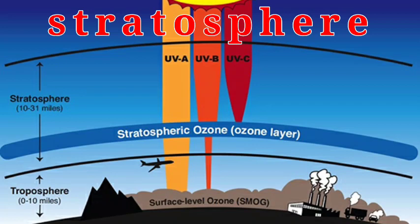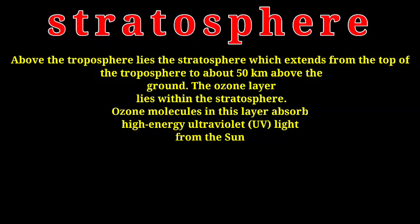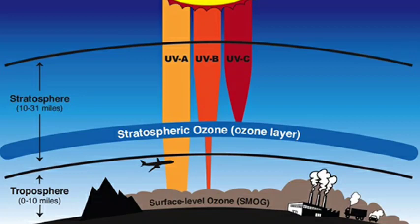The next layer is the stratosphere, the second layer after the troposphere. This layer contains ozone gas, which is one of the most important gases as it absorbs harmful radiation coming from the Sun. Above the troposphere lies the stratosphere, which extends from the top of the troposphere to about 50 kilometers above the ground. The ozone layer lies within the stratosphere, and ozone molecules in this layer absorb high-energy UV radiation from the Sun and protect our Earth.